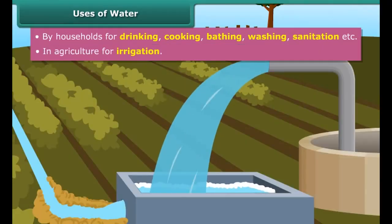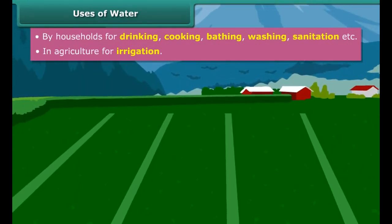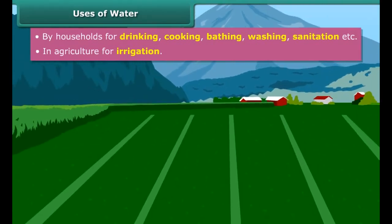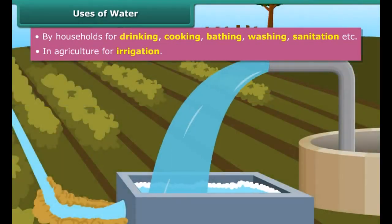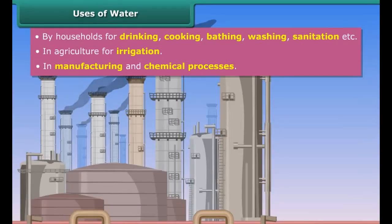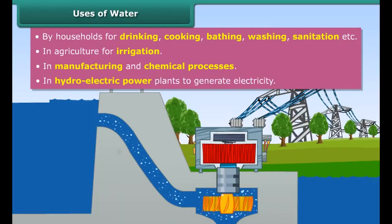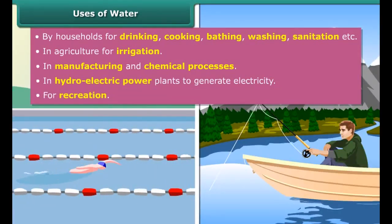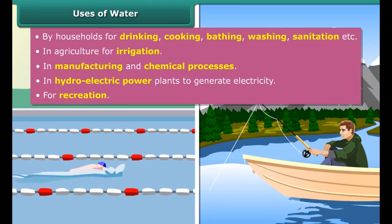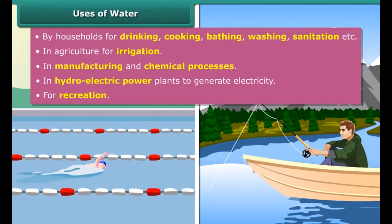Irrigation facilities improve agricultural output and help meet the growing demand for food from a growing world population. Irrigation acts as an insurance against the vagaries of nature. Water is also used in industries for cooling purposes and as a solvent. It is also used to generate electricity. Besides this, recreational activities such as swimming, fishing, sailing and other water sports also require water.